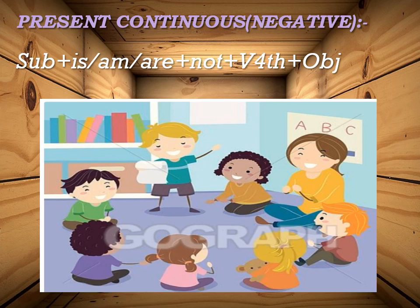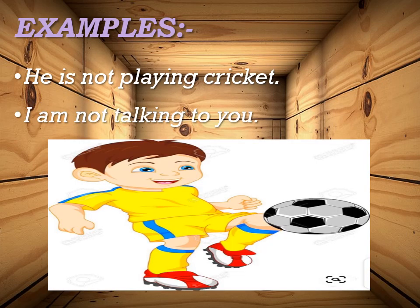Look at these examples. He is not playing cricket — woh cricket nahi khel raha. I am not talking to you — main tumse baat nahi kar raha. Toh not aa gaya hai, toh yeh inkaariya jumle ho gaye — negative sentences.